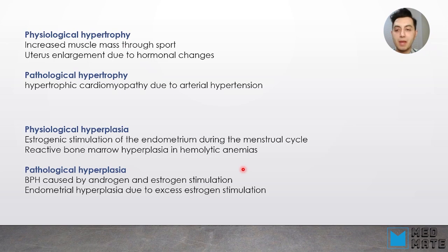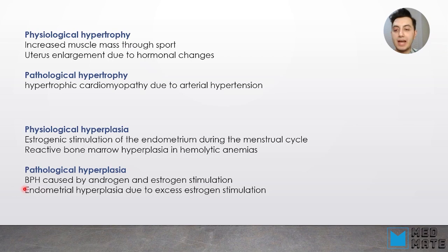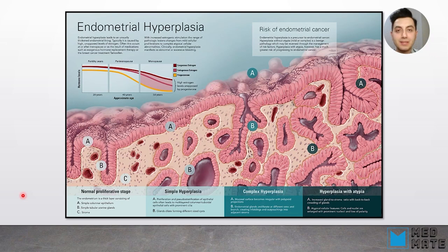Physiological hyperplasia is when there is estrogenic stimulation of the endometrium during the menstrual cycle, or when there is reactive bone marrow hyperplasia in hemolytic anemia, where stem cells of the bone marrow have to make up for the loss or dysfunction of erythrocytes. Pathological hyperplasia — an example is benign prostatic hyperplasia (BPH), caused by androgen and estrogen stimulation, or endometrial hyperplasia due to excess estrogen stimulation. Importantly, BPH does not lead to cancer.